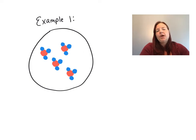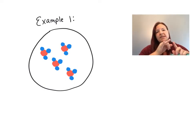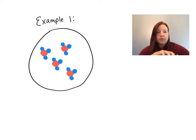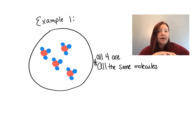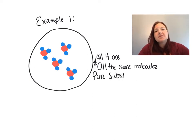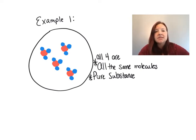Here's our first example. The first thing we have to decide when classifying matter is: is this a pure substance or is this a mixture? Pause the video, draw the picture, and decide. Once you've decided, we can determine if it's homogeneous or heterogeneous. But this is not a mixture — this is a pure substance. Pure substances are never categorized as homogeneous or heterogeneous, so we can cross that out on our paper completely.